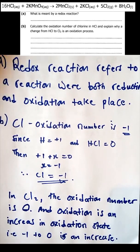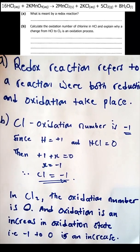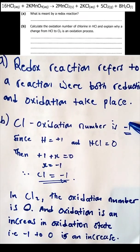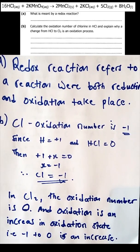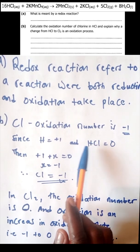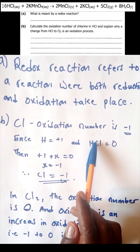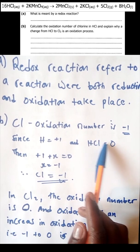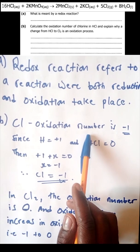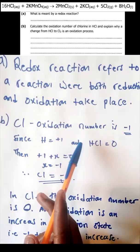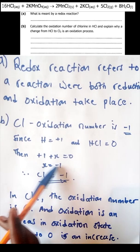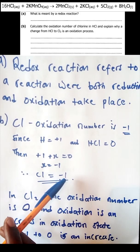Calculate the oxidation number of chlorine in hydrochloric acid and explain why the change from hydrochloric acid to chlorine is an oxidation process. The oxidation number of chlorine in HCl is negative 1. The oxidation number of hydrogen is fixed at positive 1. Since HCl is a neutral compound, the sum must equal 0. So positive 1 plus x equals 0, giving x equals negative 1. Therefore chlorine's oxidation number in HCl is negative 1.